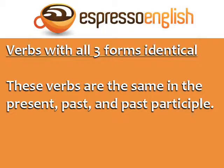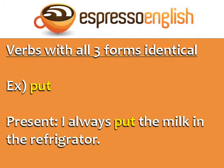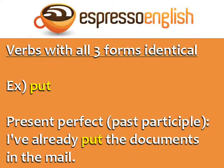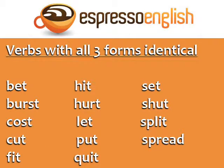The first group is irregular verbs with all three forms identical. These verbs are the same in the present, past, and past participle. One example is 'put.' Present: I always put the milk in the refrigerator. Past: Yesterday I put the books in my backpack. The present perfect uses the past participle form: I've already put the documents in the mail. Other verbs with all three forms identical include many more.